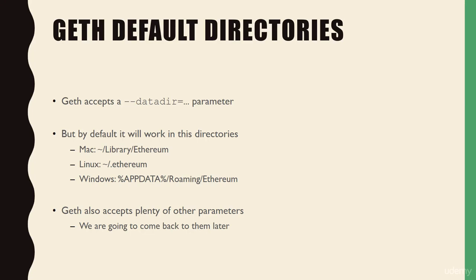Geth downloads data into default directories unless you give it a data directory parameter. By default, Geth will work in these directories: on Mac, it's in your home library ethereum folder; on Linux, it's in your home slash dot ethereum; and on Windows, it's in your AppData roaming ethereum folder, which is usually at users/AppData/roaming/ethereum.